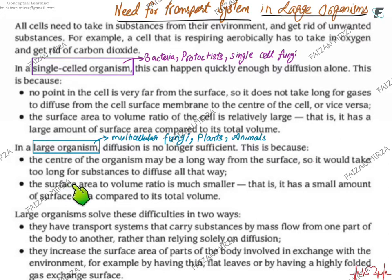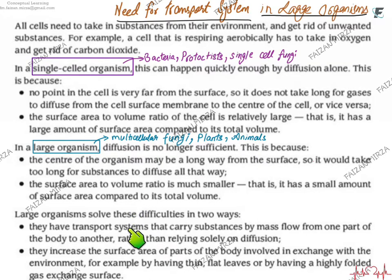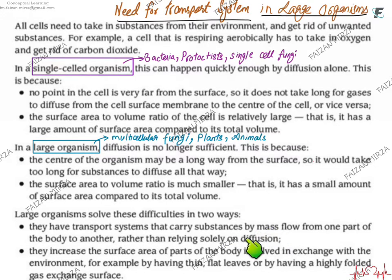In large organisms — multi-cellular fungi, plants, or animals — diffusion is no longer sufficient. The center of the organism may be far from the surface, so it would take too long for substances to diffuse all the way to the center. Also, the surface area to volume ratio is much smaller, because surface area increases by square while volume increases by cube. Large organisms need a transport system to carry mass flow from one part of the body to another, rather than relying solely on diffusion.